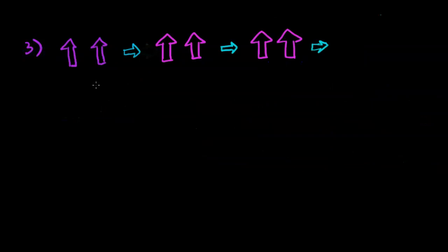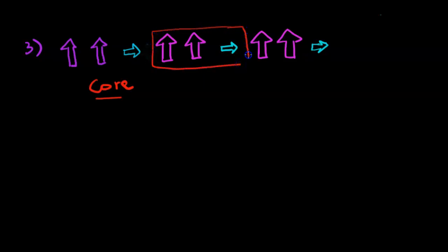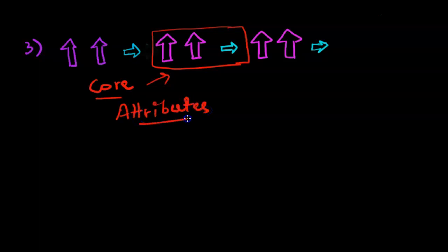Let's take one more example for practice. To find the core, we read the pattern: there are two upward-facing pink arrows and one right-facing blue arrow, repeating. So two upward-facing pink arrows and one right-facing blue arrow is the core of this pattern. Now to describe this core, we write down the attributes.